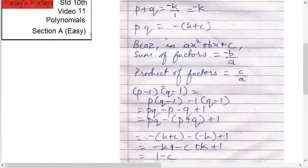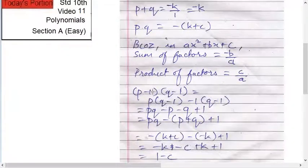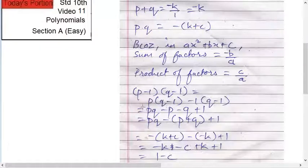So (p-1)(q-1). It is simple: pq minus p minus q plus one. So pq minus bracket, take this minus common, p plus q, and plus one.